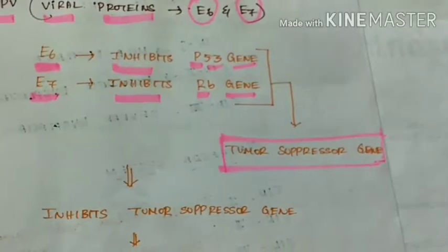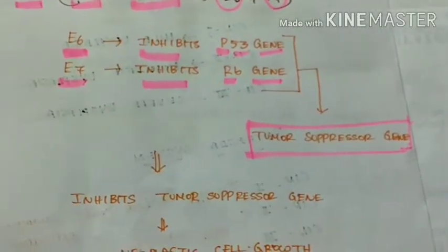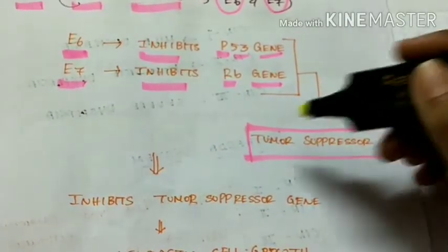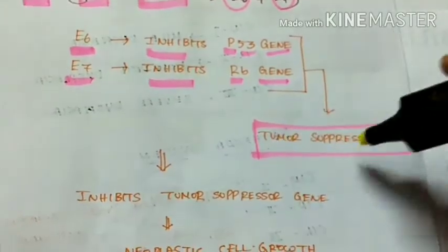So the role of tumor suppressor gene is to inhibit the uncontrolled proliferation and thereby suppress the growth of tumors. So these are called tumor suppressor genes.